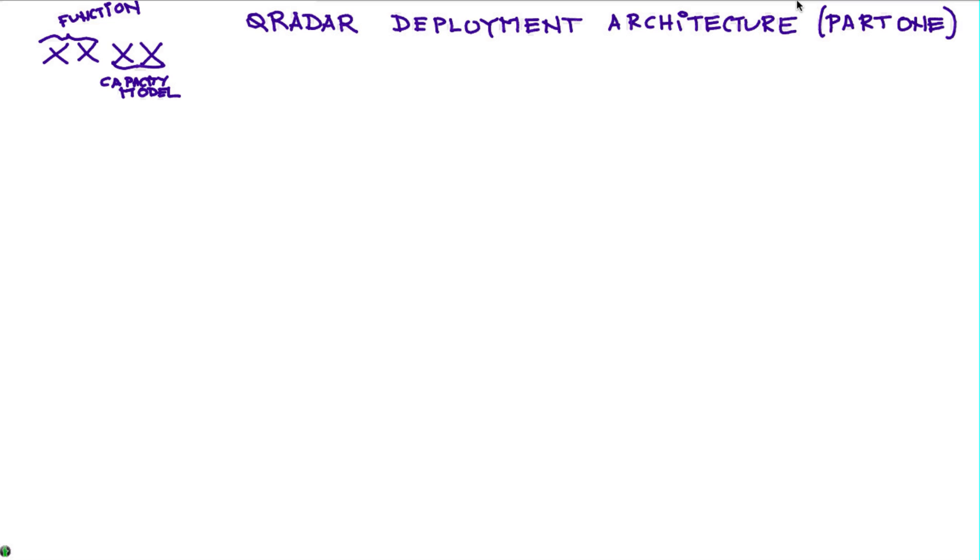For example when I talk about a 3129 the first two digits denote that this is a console, while the last two digits denote the type of machine that it is. In the same way a 3148 is an all-in-one or a console and the 48 denotes a machine particularly with SSD drives.